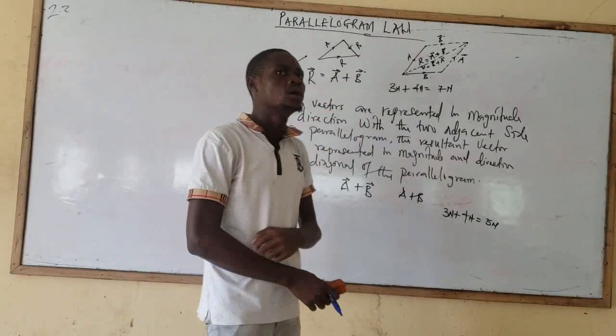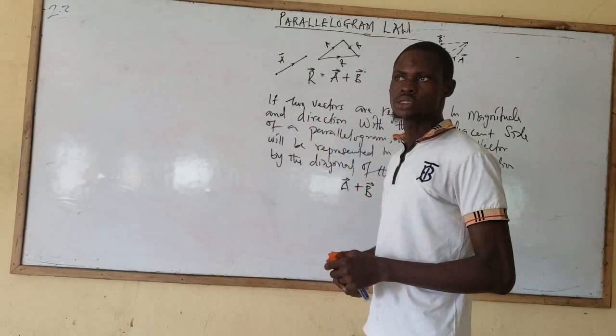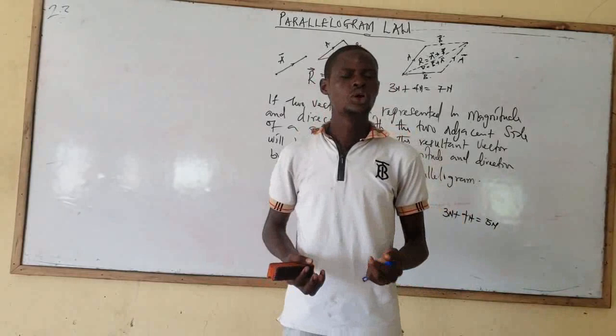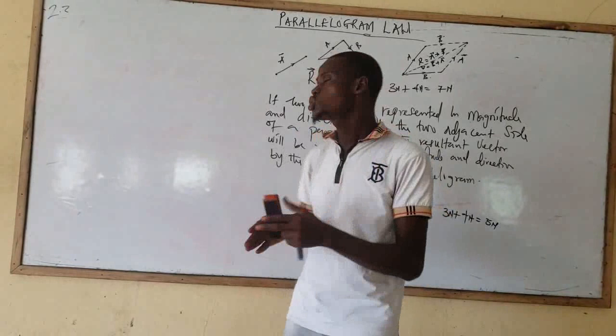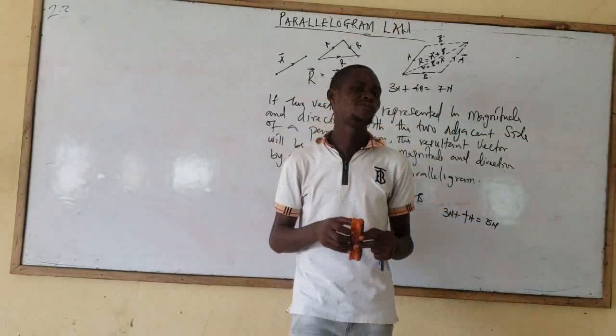This parallelogram law is also applicable if you have more than one vector. If I'm having three vectors, although the parallelogram law is applicable, the best approach when you have more than two vectors is to use the triangle law. A triangle law is a part of the parallelogram law — simply putting the parallelogram into different forms of triangles and then applying the law. In my next video, we are going to look into triangular vectors and also the polygon law of vectors. Please try to watch the next video. Thank you very much, and please don't forget to subscribe to my YouTube channel.